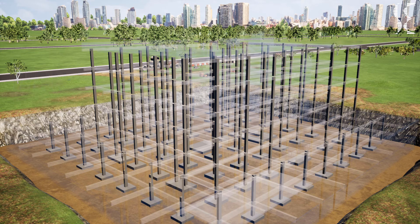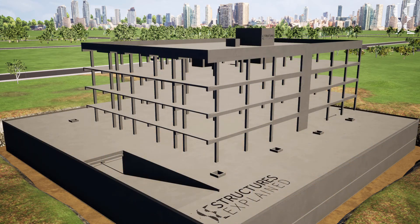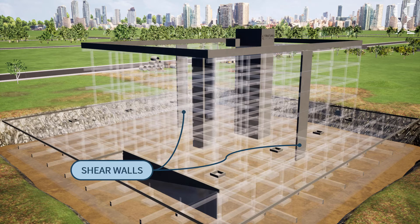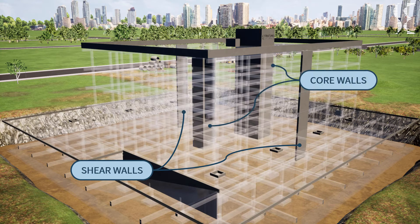Next we discuss the various types of walls present in the superstructure. First comes shear walls, which are part of the lateral load resisting system and counter wind and earthquake forces. Shear walls are placed at appropriate locations of the building by design and start right from the foundation. A combination of shear walls connected rigidly with each other is called a core wall. The core wall generally encloses elevators, stairs, or utility services, and is also part of the lateral load resisting system.